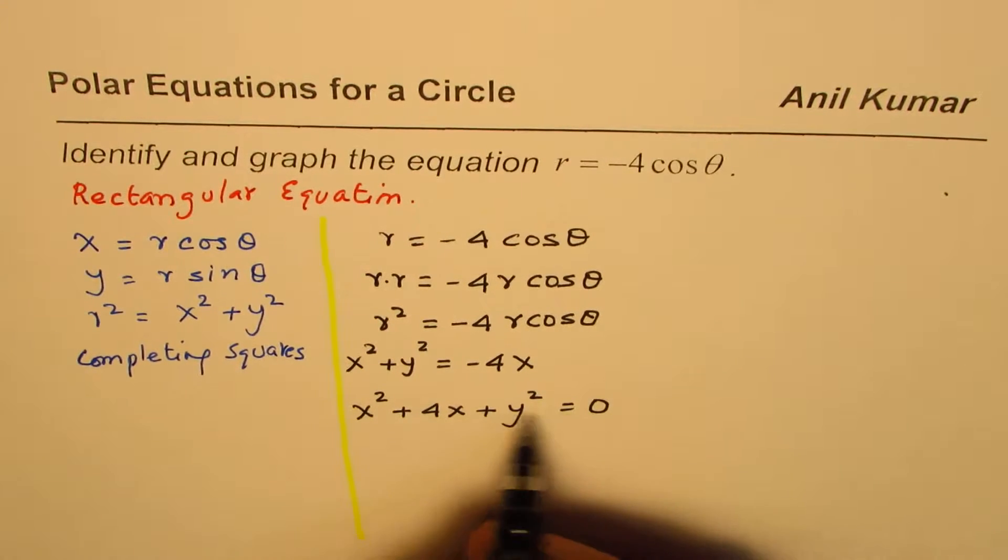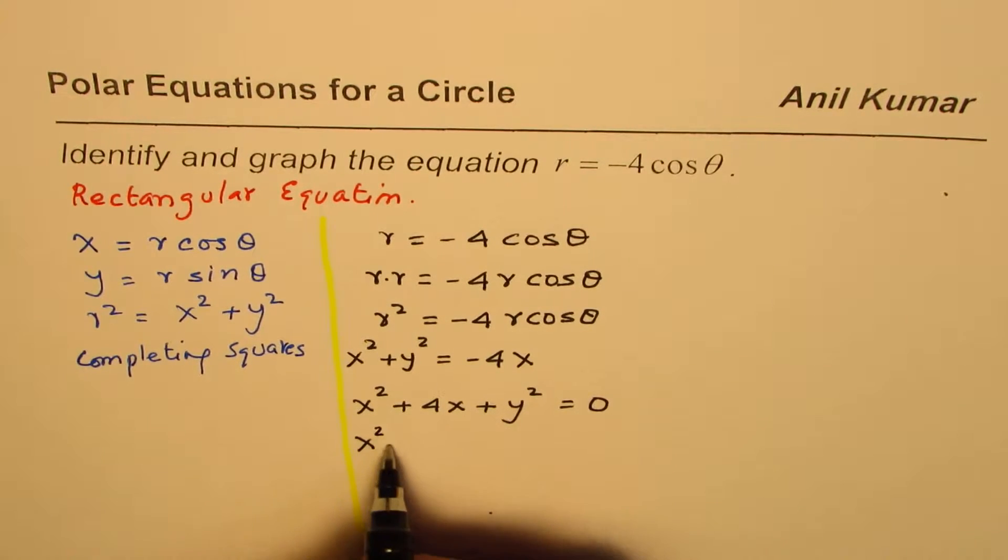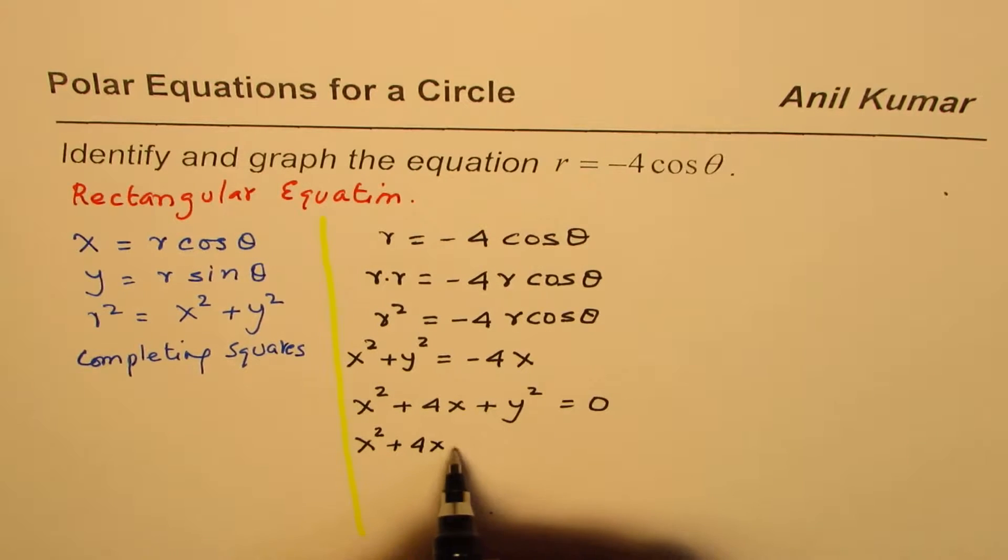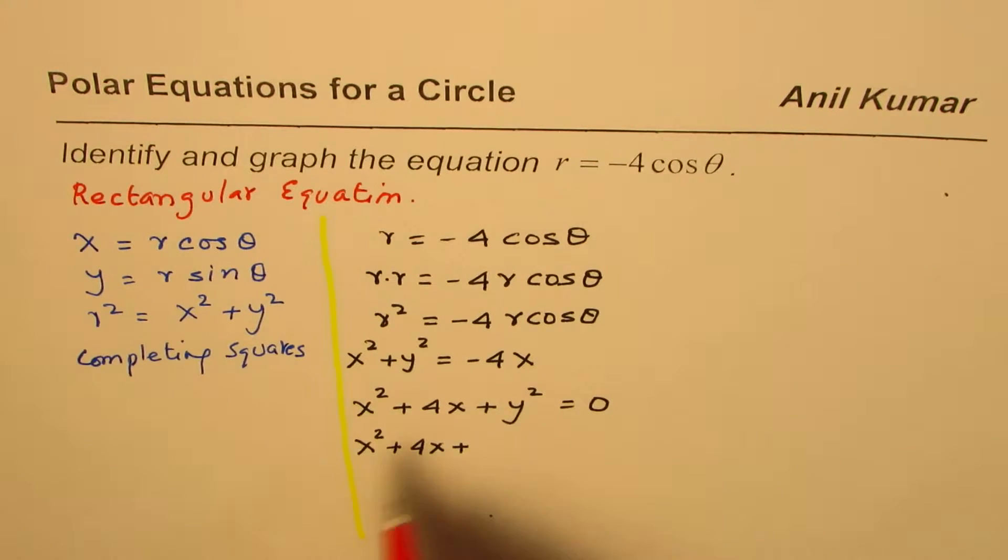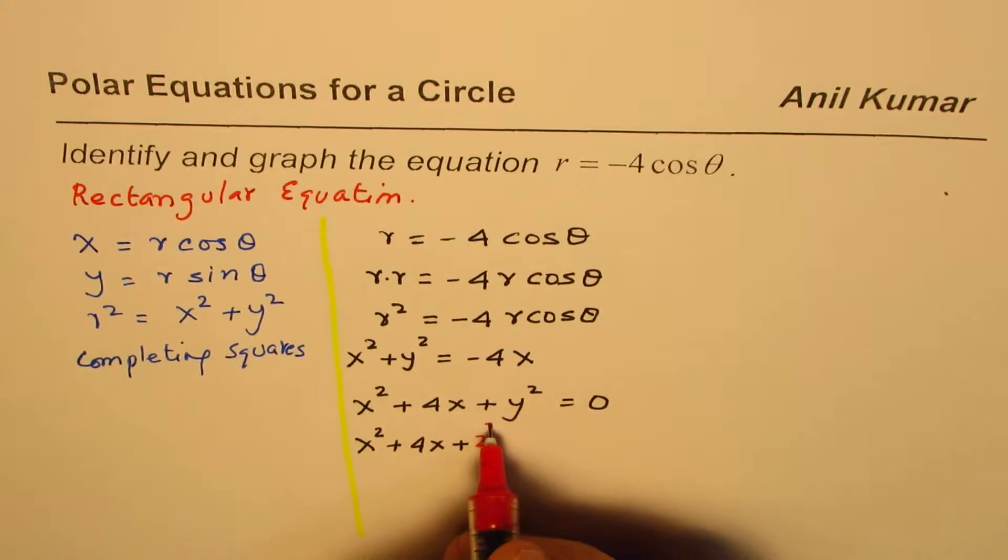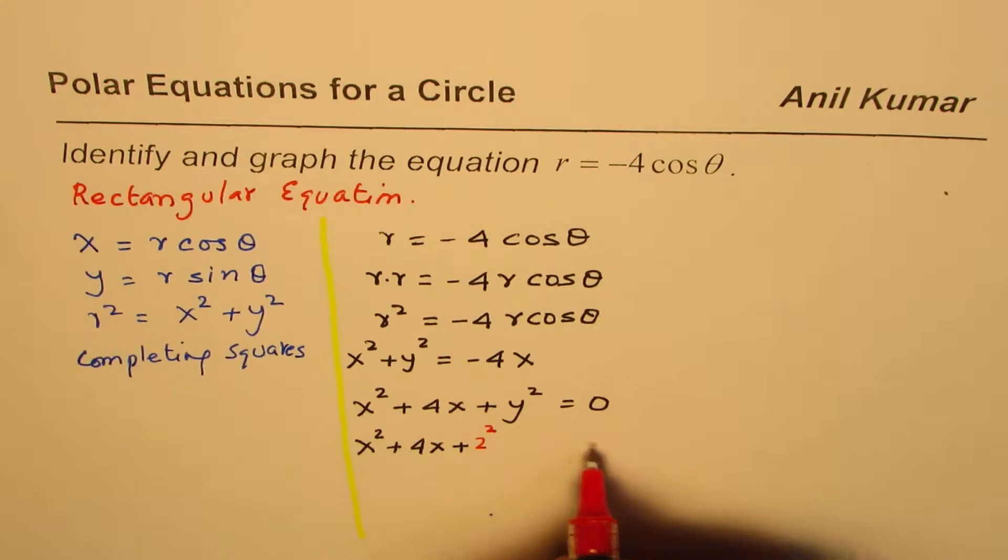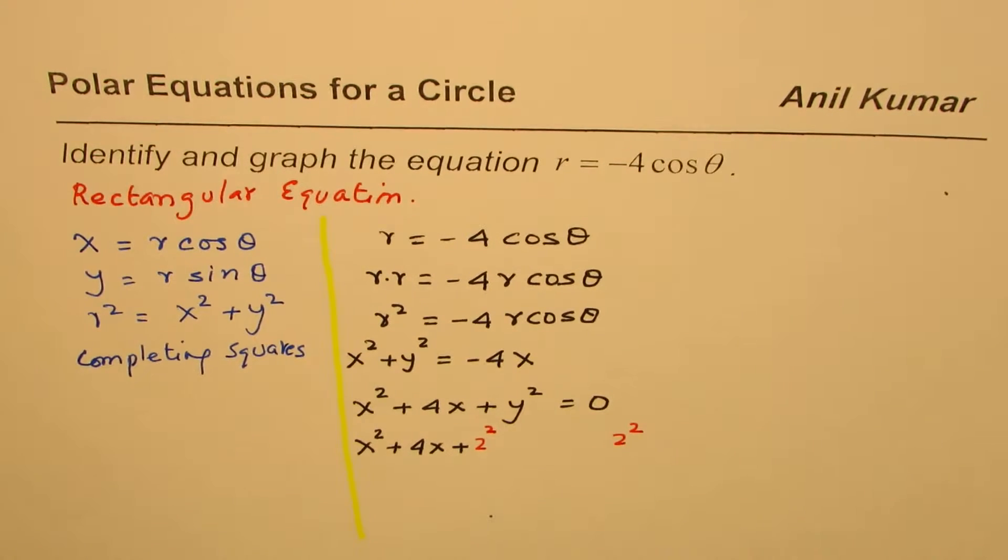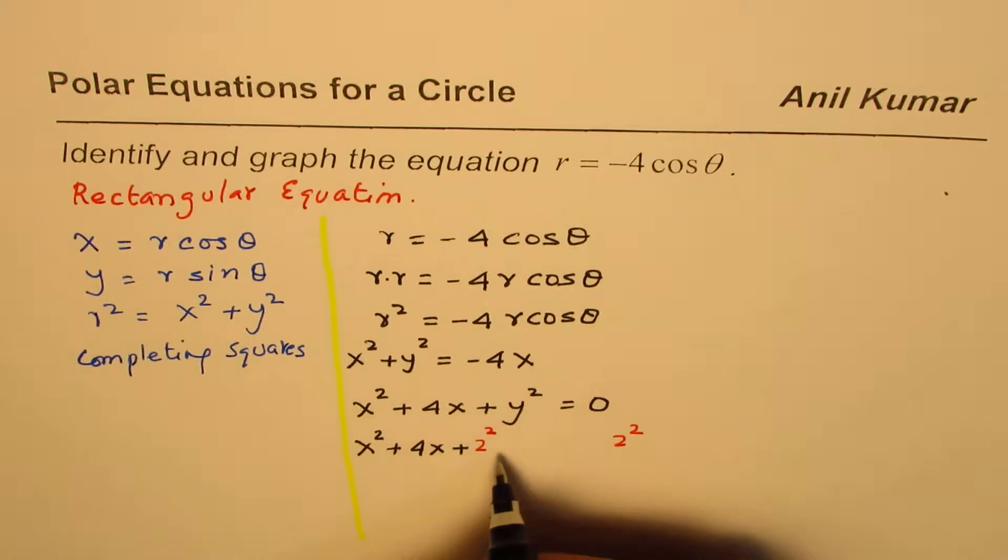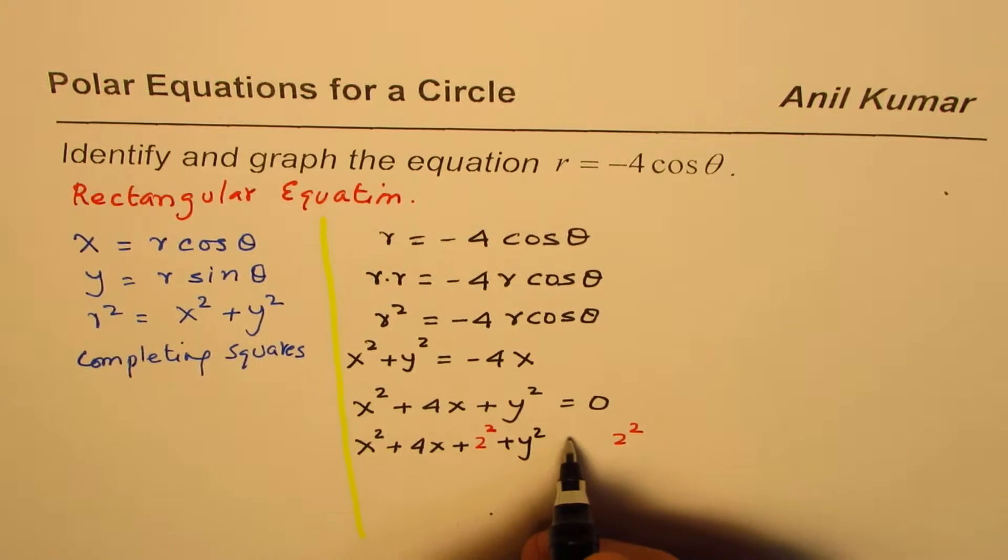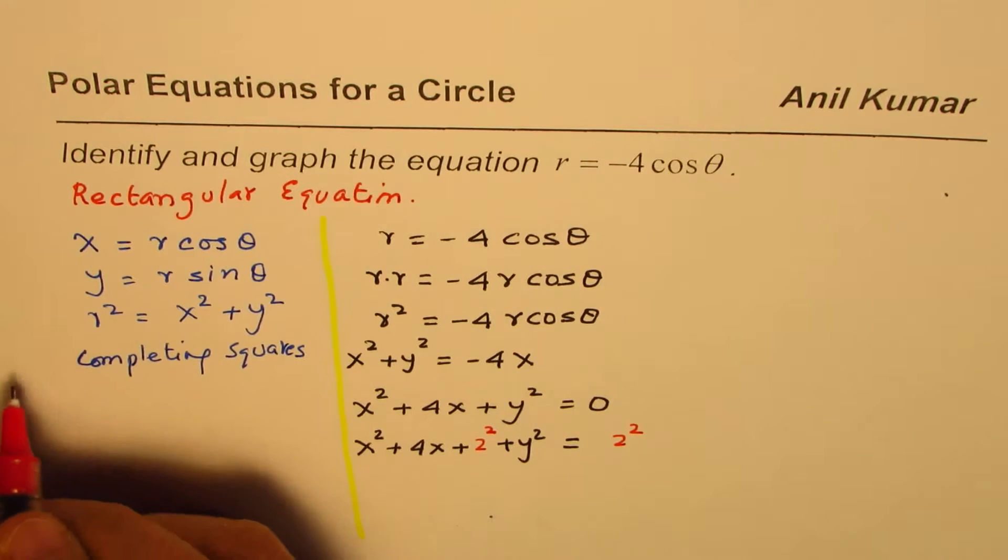Or what we can do is, we can just add 2 squared on both sides. So, we get x squared plus 4x plus... So, at this stage, we are adding 2 squared on both sides. Is that okay just to complete the squares? Now, this is the completing the squares step, which I was talking about.